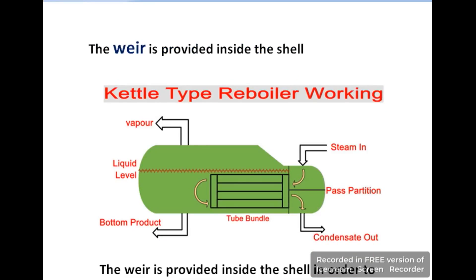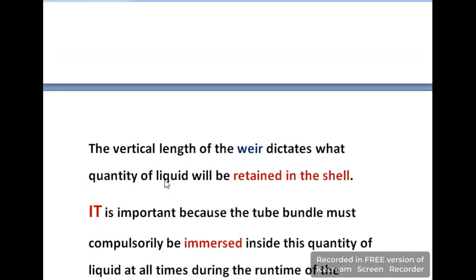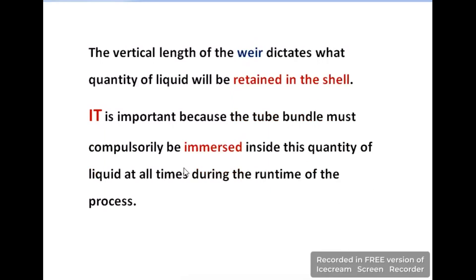A weir is also provided in the shell, and its role is to control the level of the liquid by exiting excess liquid from the shell. The vertical length of the weir dictates what quantity of liquid will be retained in the shell, because it is important that the tube bundle must remain immersed in some quantity of liquid at all times during the running of the process.